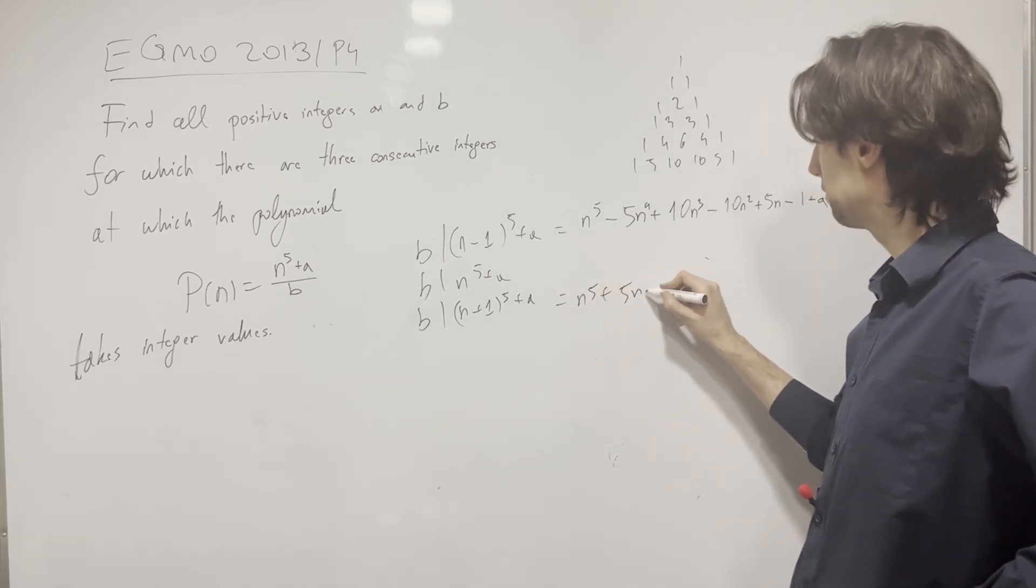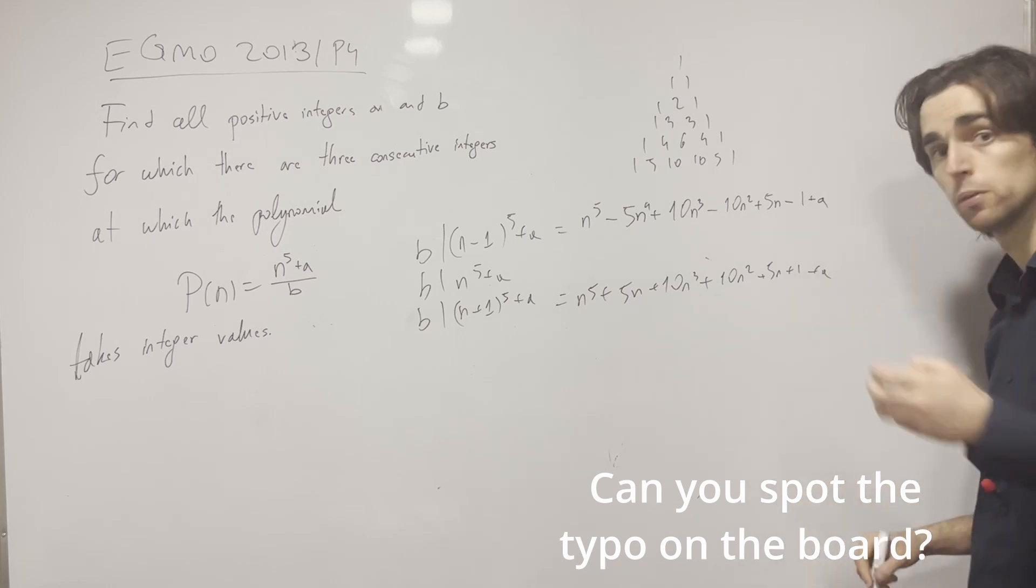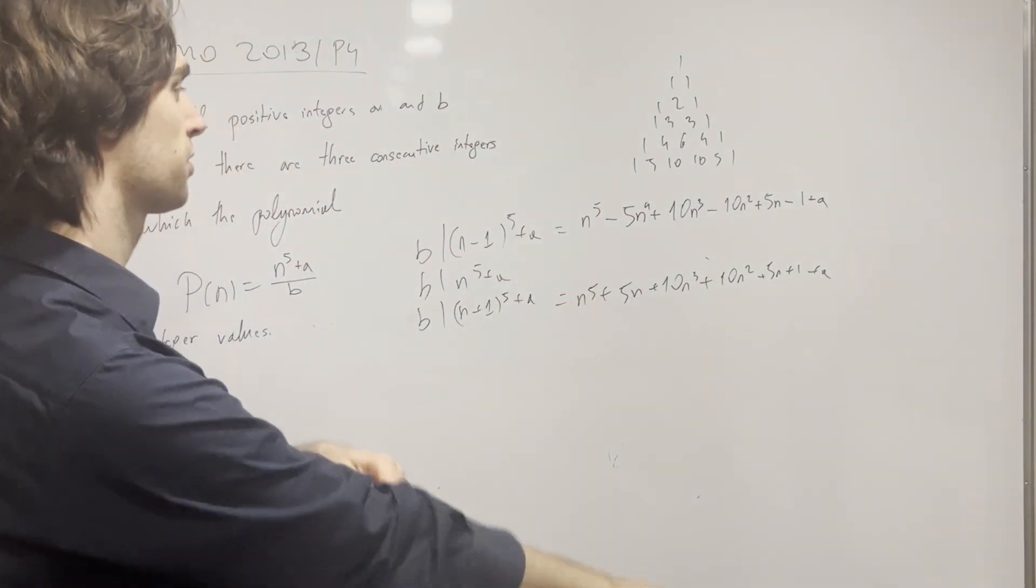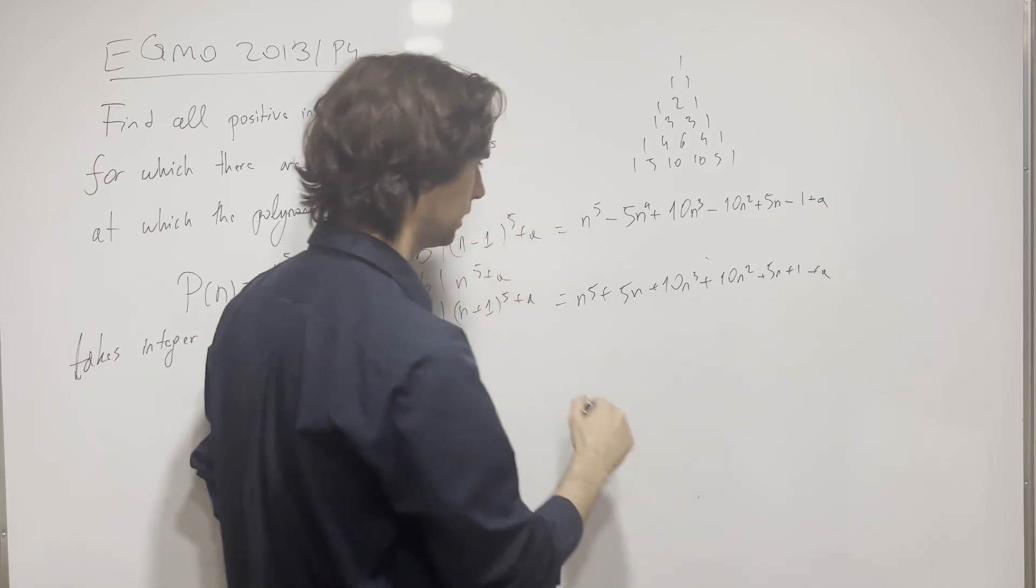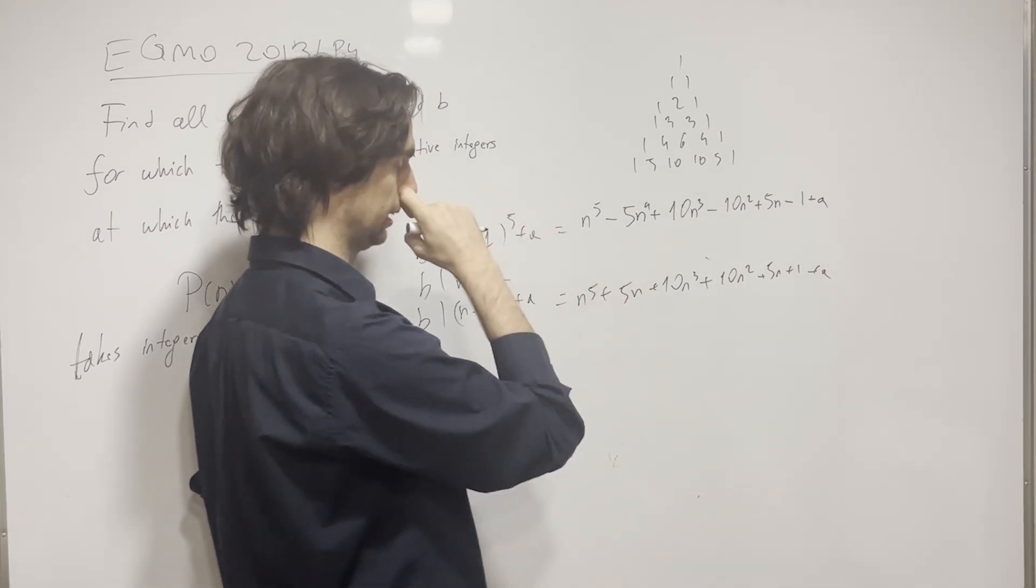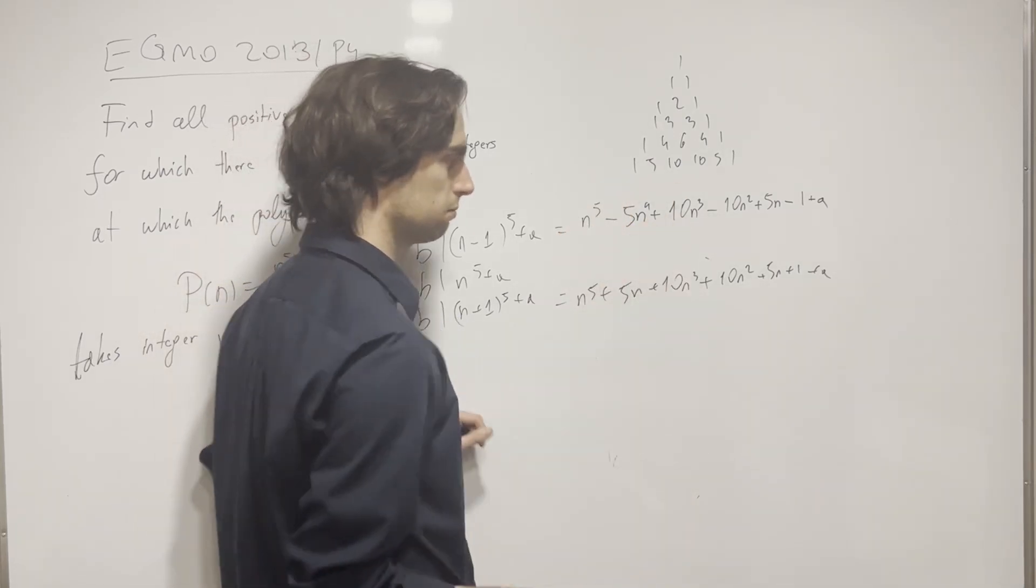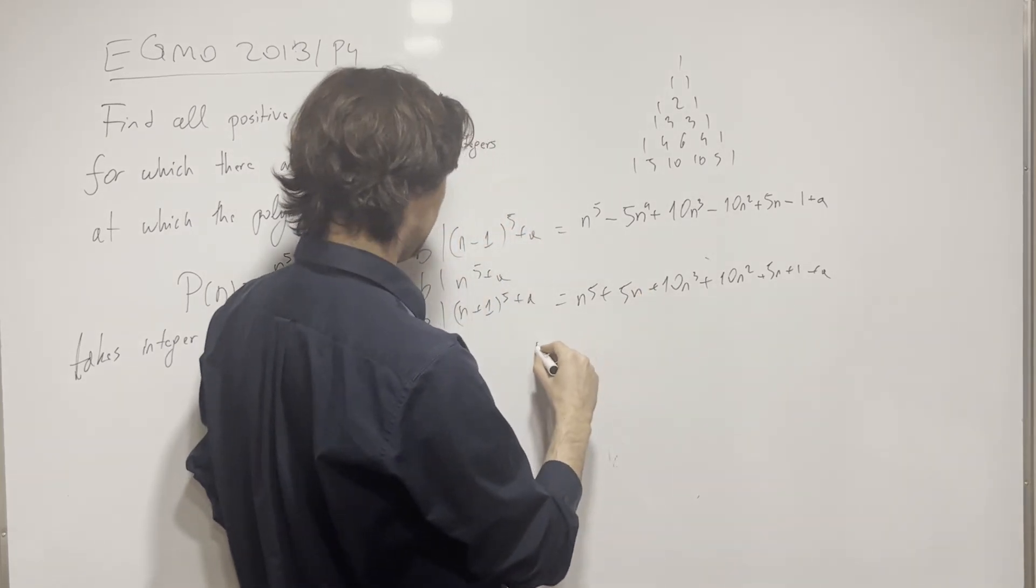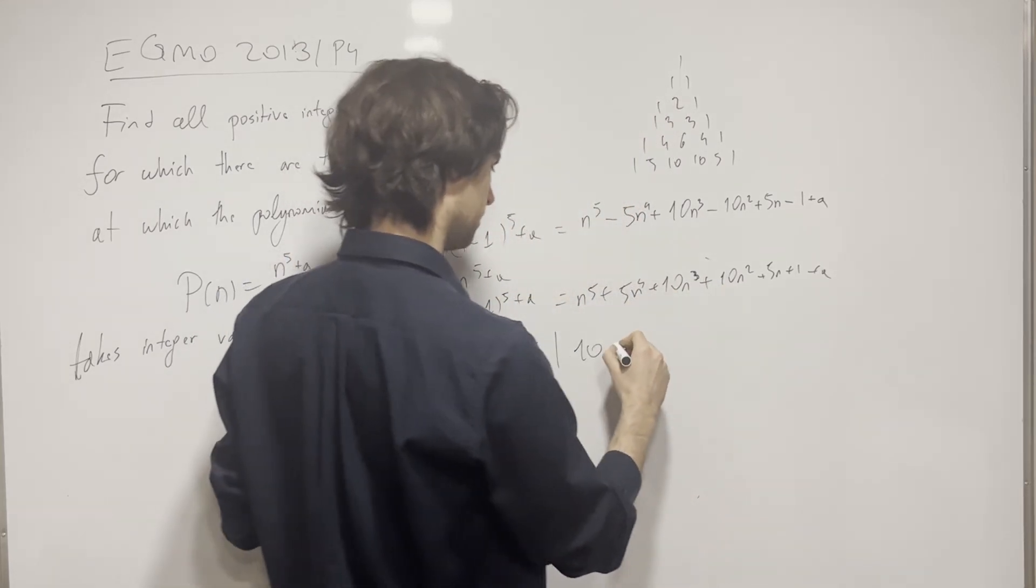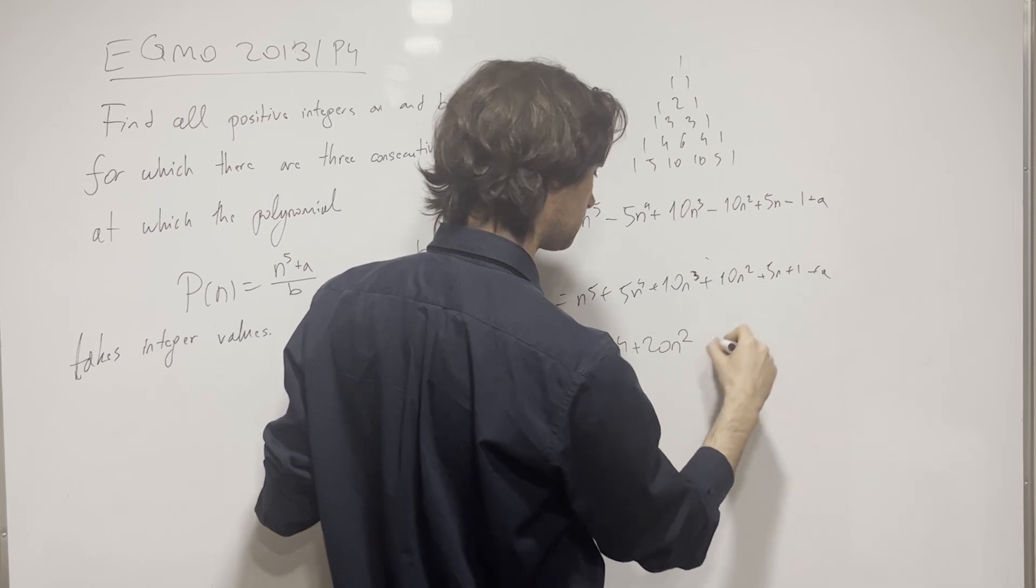We're going to have n^5 + 5n^4 + 10n^3 + 10n^2 + 5n + 1 + a. And now, what are we going to do? Well, let's add so that we get rid of the minuses and have less things to deal with. Now, when we subtract this from this, we get... I'm subtracting this from this. And what I'll be left with is b divides 10n^4 + 20n^2 + 2.